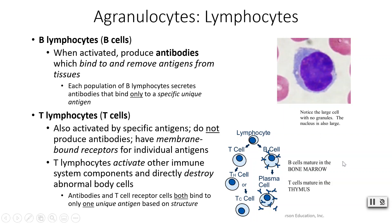Both B cells and T cells are created in your red bone marrow, but they don't all mature there. B cells mature in the bone marrow, while T cells mature in your thymus — not your thyroid, your thymus.